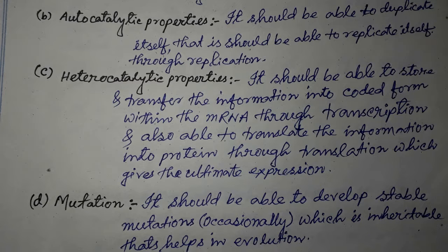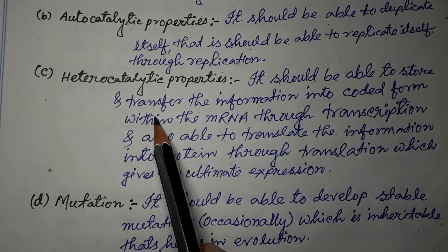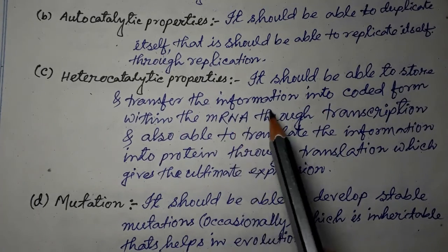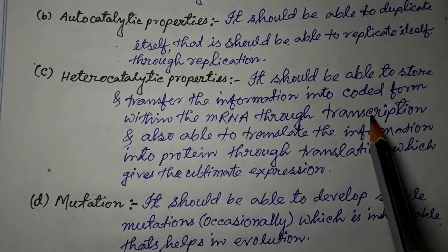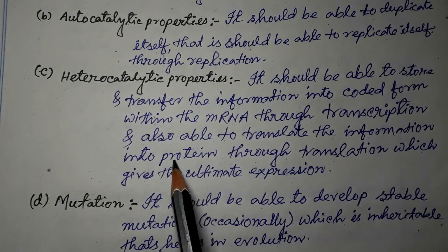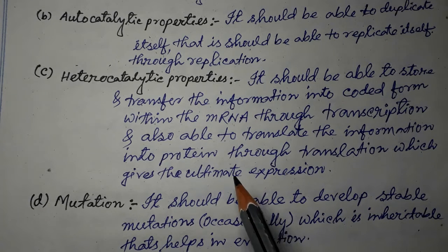So the genetic material should first be able to store and transfer its information and features to the next generation. The DNA, as our genetic material, should be able to store and transfer the information into coded form within the mRNA through transcription, and also be able to translate that information from mRNA into protein through the process of translation, which gives the ultimate expression.